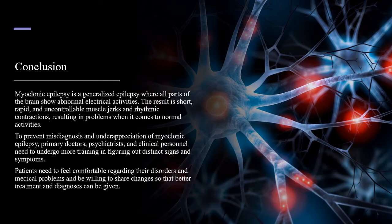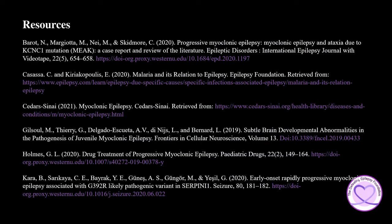In conclusion, myoclonic epilepsy is a generalized epilepsy where all parts of the brain show abnormal electrical activities, resulting in short, rapid, and uncontrollable muscle jerks and rhythmic contractions. To prevent misdiagnosis and underappreciation of myoclonic epilepsy, primary doctors, psychiatrists, and clinical personnel need to undergo more training in figuring out distinct signs and symptoms. Patients need to feel comfortable regarding their disorders and be willing to share changes so that better treatment and diagnosis can be given. To learn more about myoclonic epilepsy, please check out the resources used in the presentation today.